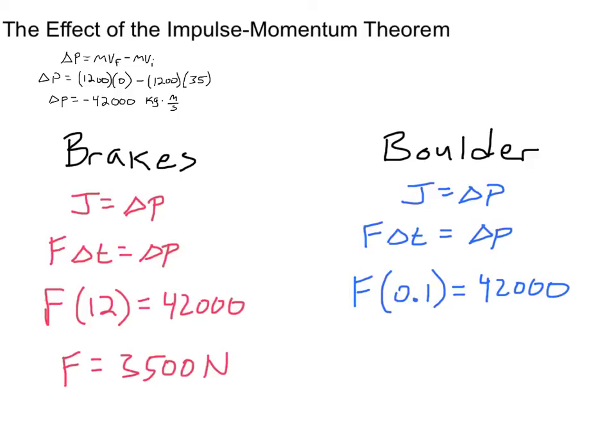Over here, if we run into the boulder and say we come to a stop in about 0.1 seconds, that same change in momentum is going to give us an average force of 420,000 newtons. So in both cases, the car will have the same change in momentum and it's also going to undergo the same impulse. The difference will be in the time and the force that it takes to stop the car.